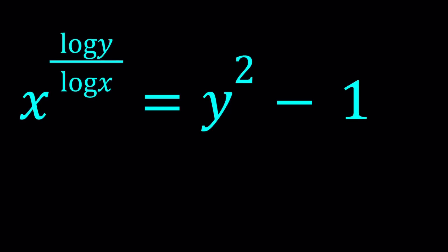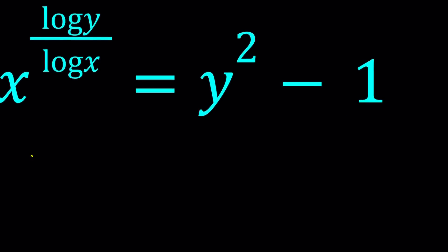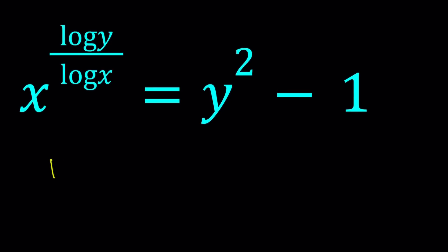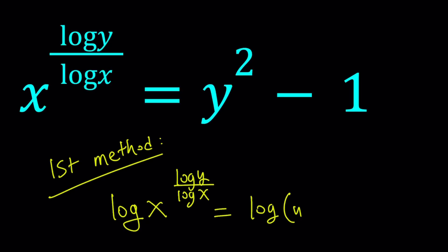So I'm thinking about presenting two methods, and let's start with the first one. So for my first method, I would like to log both sides. Let's go ahead and do that. And if I log, and here log means base 10, in case you didn't know. I'm going to log both sides with base 10. And then, this is going to give me a nice equation.